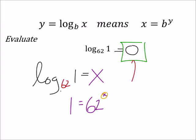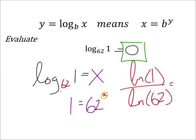the change of base formula to solve this one. So you could have taken the natural log of 1 divided by the natural log of 62, and that would have given you 0 as well.